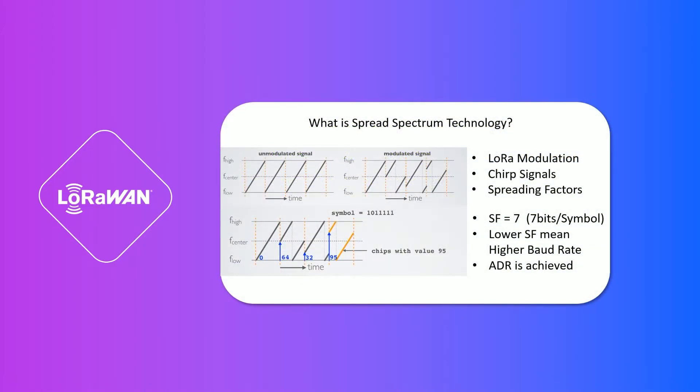It is a modulation technique based on chirp spread spectrum modulation. The unmodulated signal is a chirp signal between two corner frequencies. A modulated signal has various starting frequency levels depending on the spreading factor. A spreading factor of 7 means there are 2 to the power of 7, which is 128 starting points. This dynamically changing spreading factor makes up the adaptive data rate of LoRaWAN.